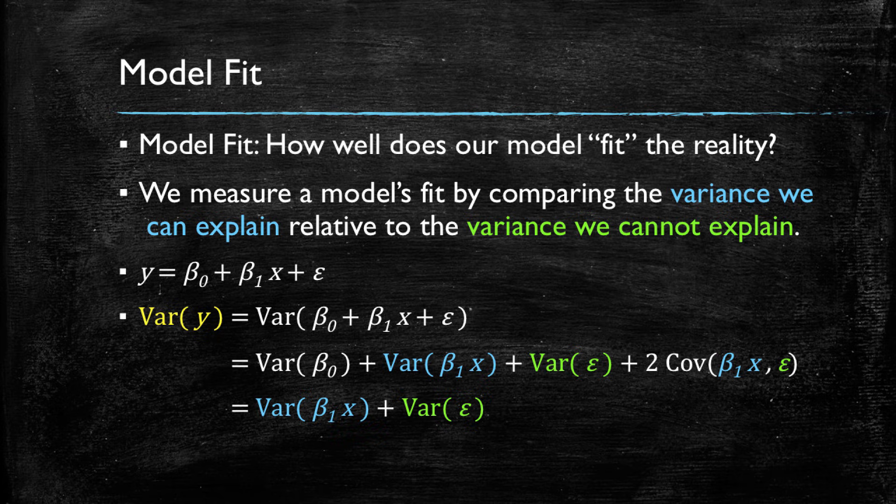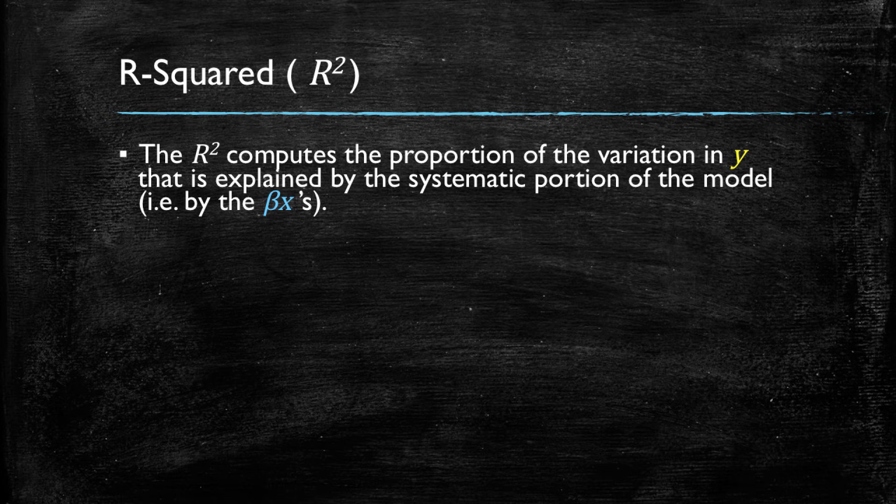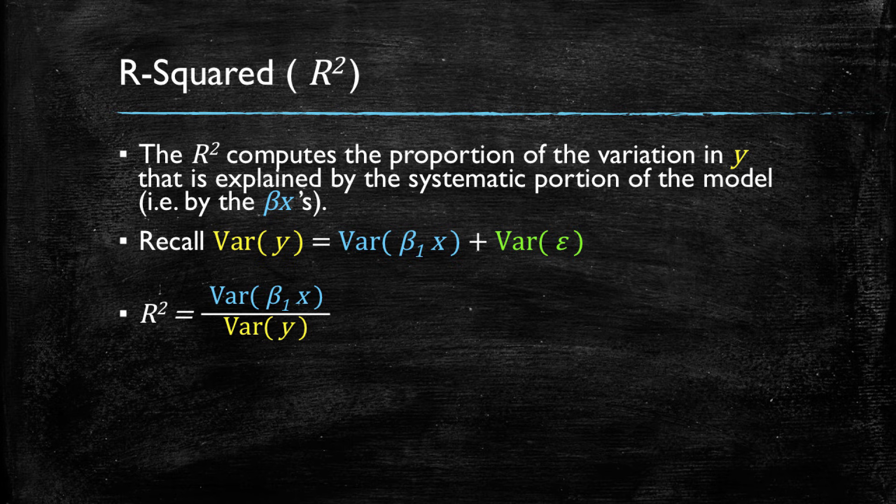We will evaluate our model's fit using two metrics, the first of which is the R squared. The R squared is found by computing the proportion of the variation in Y that is explained by the systematic portion of the model, that is by the beta times X's. So recalling this is the expression for the variance of our dependent variable, we will simply compute the ratio of the explained variance by the beta times X over the total variance of the dependent variable, the variance of Y.